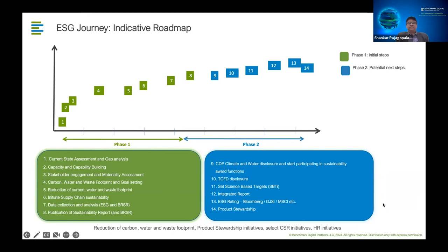Progressively, the next steps over the following year include disclosures like CDP, participating in awards, understanding TCFD disclosures, setting science-based targets, and pursuing integrated reporting. Some initiatives are done every year — stakeholder engagement, materiality mapping, reduction of carbon, water, and waste footprints, and CSR and HR initiatives. This is a typical indicative roadmap for a company's ESG journey, with milestones and timelines around carbon neutrality, water neutrality, waste neutrality, social capital improvement, and sustainable supply chain engagement.